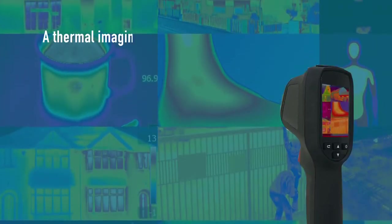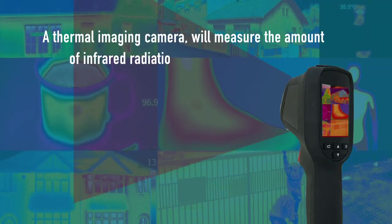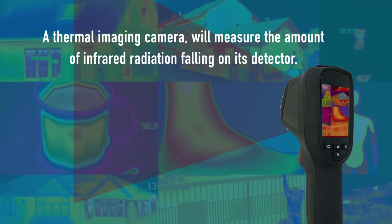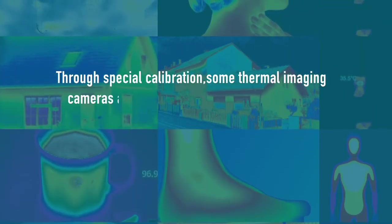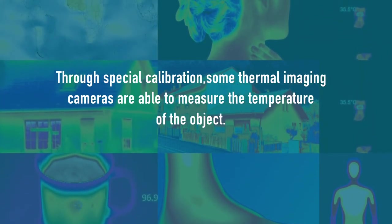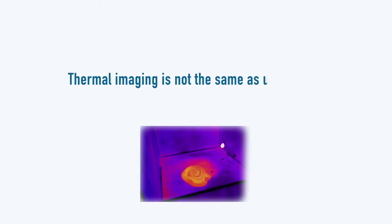A thermal imaging camera will measure the amount of infrared radiation falling on its detector. Through special calibration, some thermal imaging cameras are able to measure the temperature of the object.